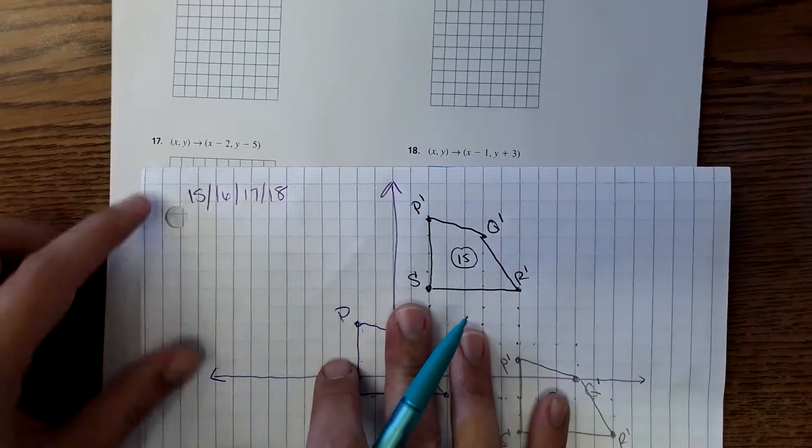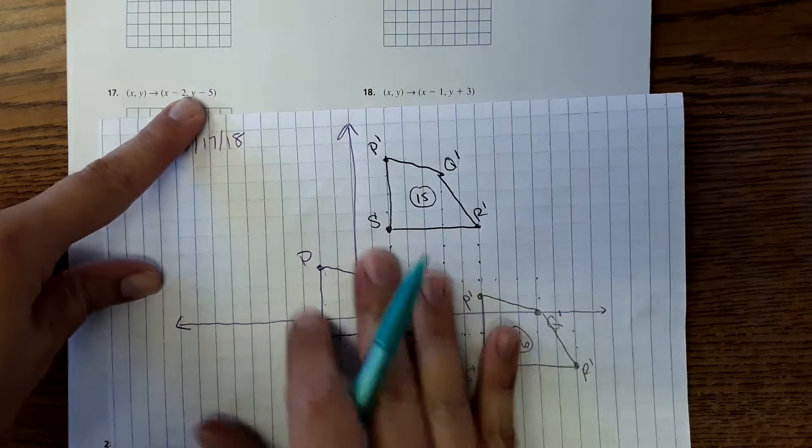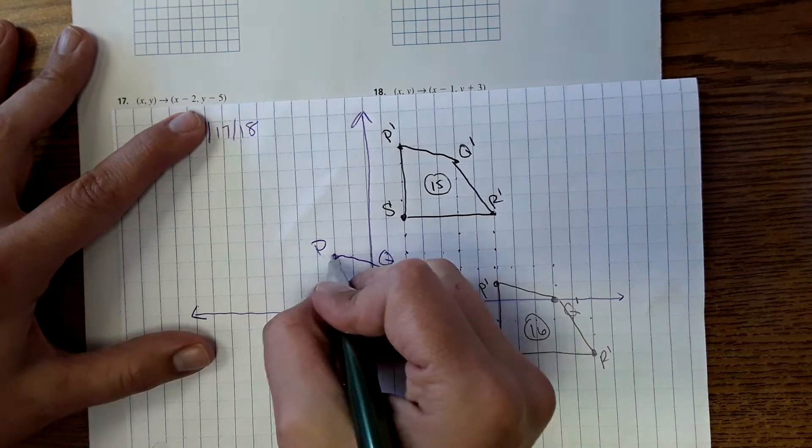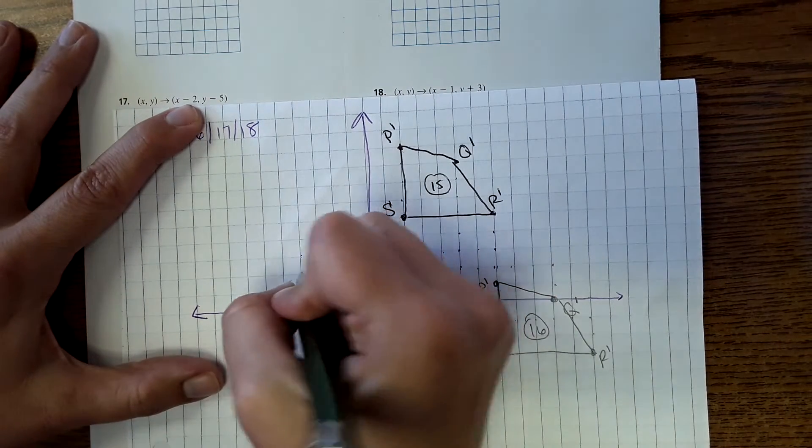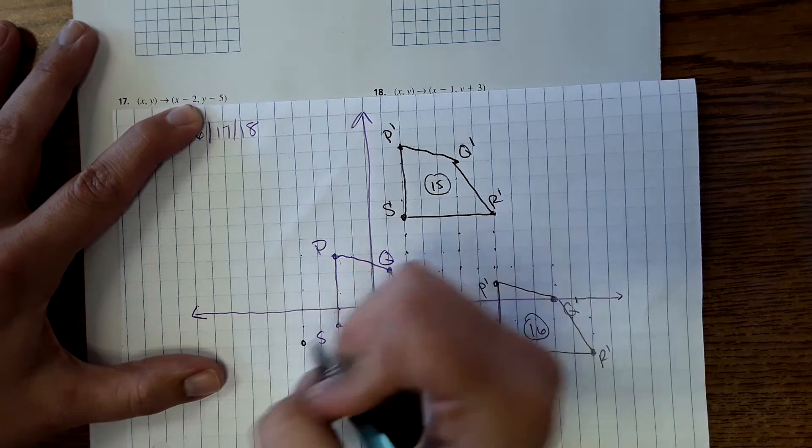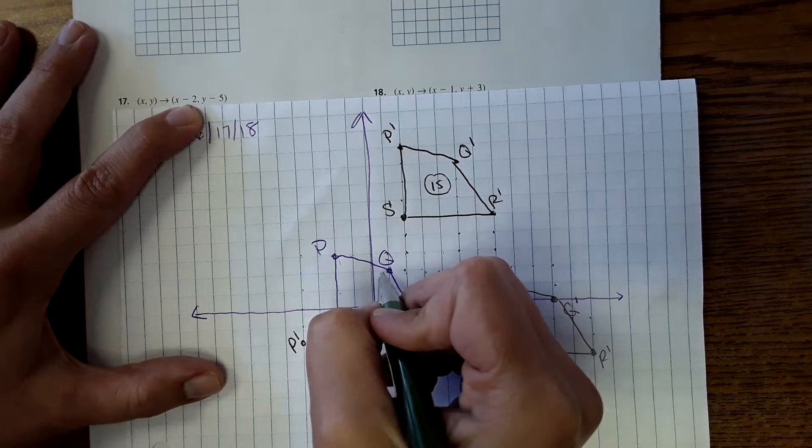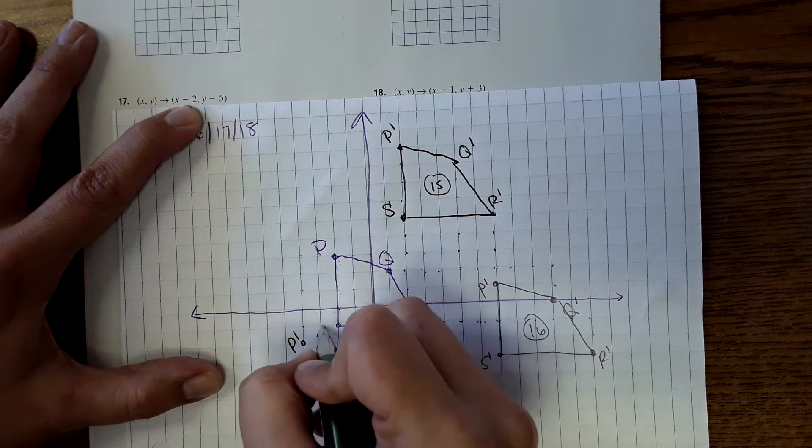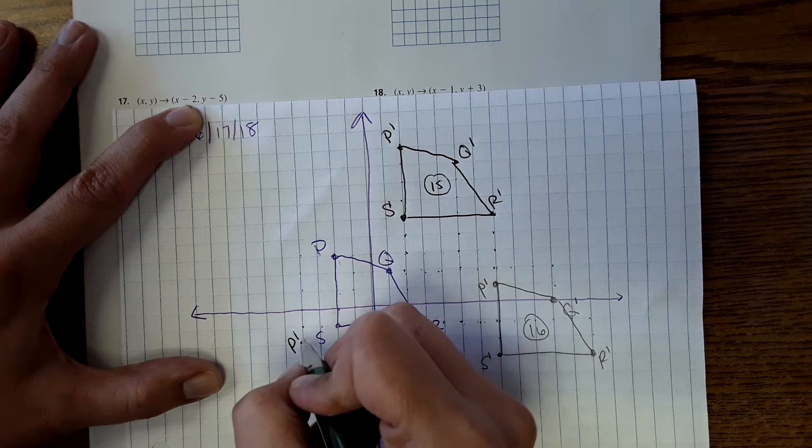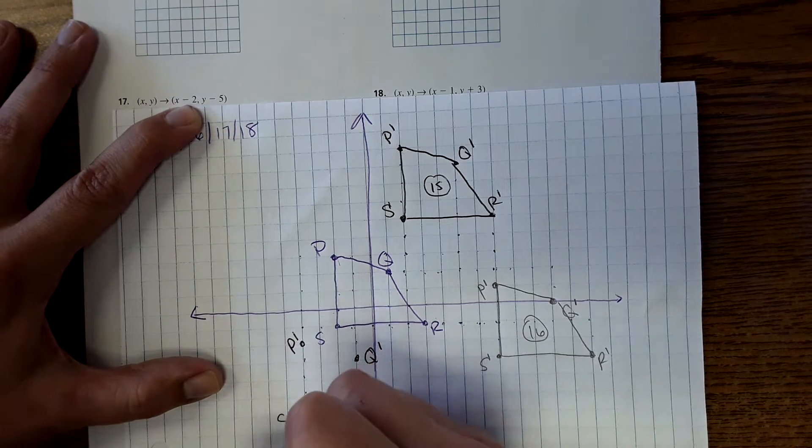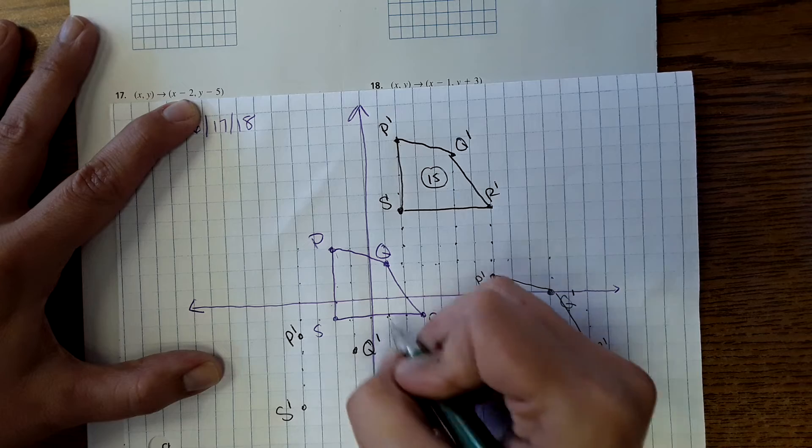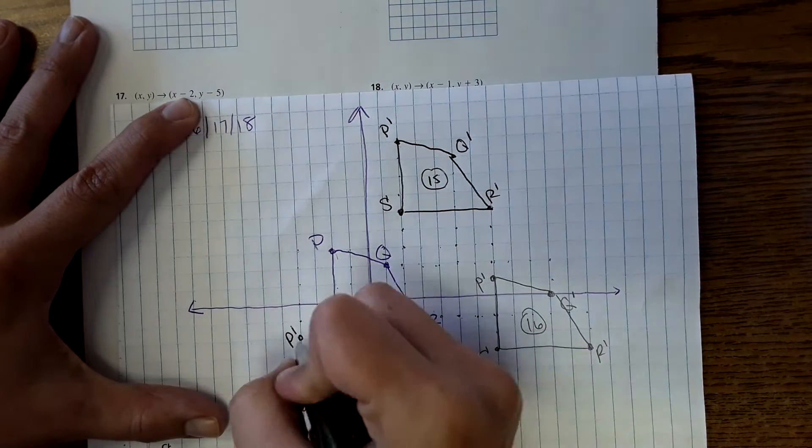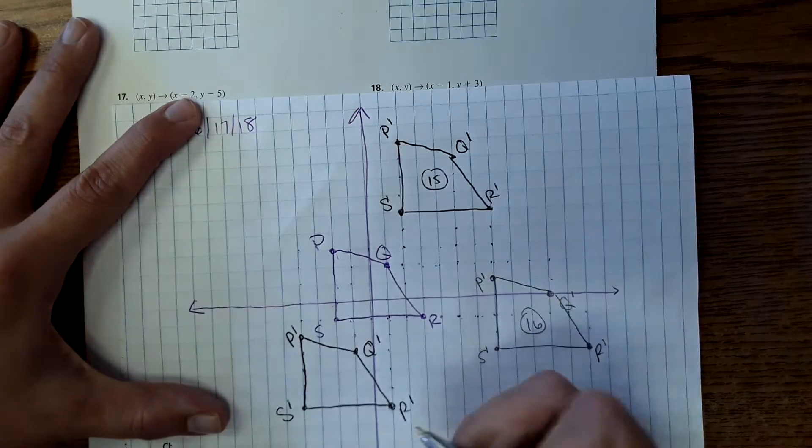Okay, moving down to 17. My rule is X minus 2, Y minus 5. So again, just working from the original, X minus 2 would be left 2, down 5. And again, for R, left 2, down 5. So again, I'm going to go to R prime. Okay, this is number 17.